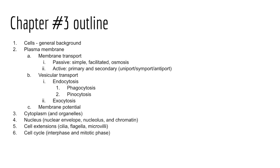We'll briefly discuss membrane potential, where we'll then come back to that in our study of skeletal muscles later on this term, as well as again look at membrane potential in the second term of anatomy and physiology when we discuss the nervous system. When we return for the second lecture of this chapter, we'll consider the components making up the nucleus, look at the three major cell extensions, and discuss the cell cycle. So let's go ahead and get started.